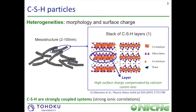If we now focus on those smaller particles, we know that they have heterogeneities on their morphology and surface charge. Indeed, each particle is the result of a stack of CSH layers. Those layers are made of a calcium oxide octahedral layer in between silica chains with a finite size. They have a high surface charge which is compensated by calcium counter-ions. Thus, CSH are strongly coupled systems with strong ionic correlations.